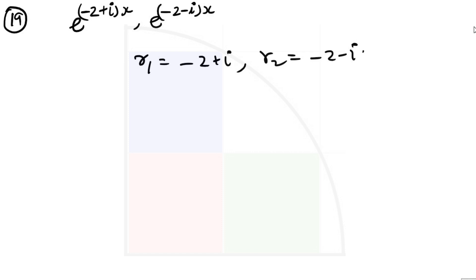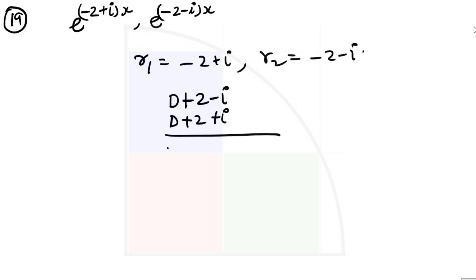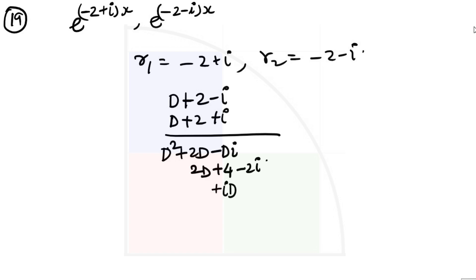The root will be there and then its conjugate will also be there. We can write the auxiliary equation by subtracting each root from D. This gives (D plus 2 minus i)(D plus 2 plus i). Expanding: D squared plus 2D plus Di minus 2D plus 4 minus 2i minus Di plus 2i minus i squared.